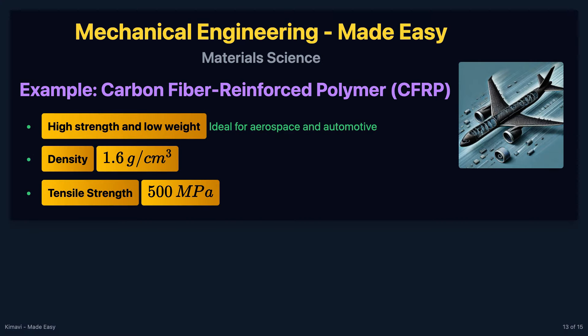Carbon fiber reinforced polymer, or CFRP, is widely used in aerospace, automotive, and sports equipment due to its high strength and low weight. The density of CFRP is approximately 1.6 grams per cubic centimeter, and it has a tensile strength of about 500 megapascals.